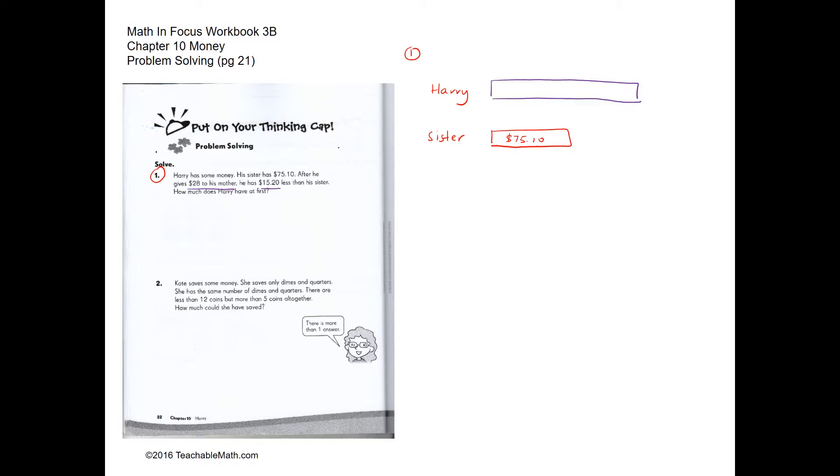So this is how much Harry has. And after giving $28 to the mom, he has less. So this is how much Harry has after giving $28 to the mom. So this is $28. So after giving $28 to the mom, he has less than his sister. And how much less? Let's use a different color. He has this much less, and this much is $15.20.